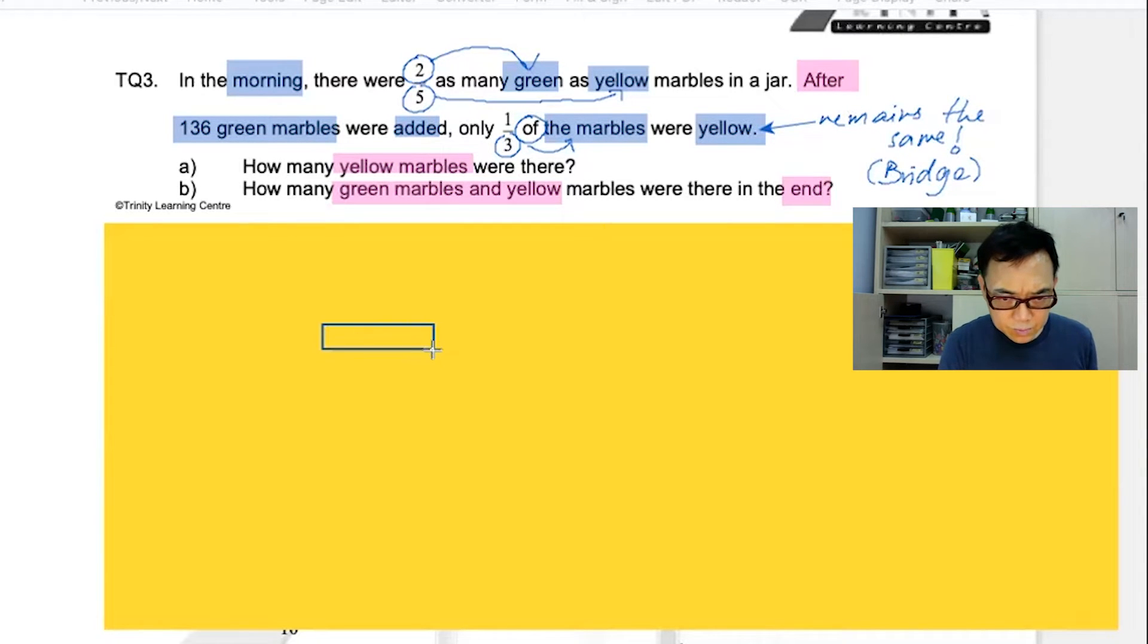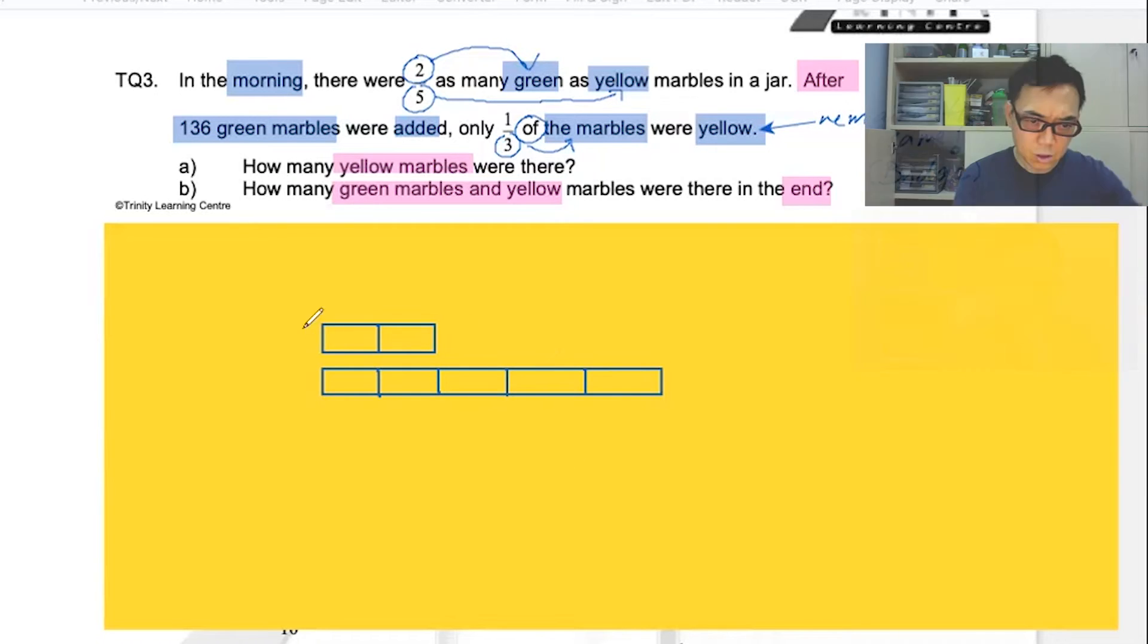I have two. And then I have five. About here. Green. Yellow.